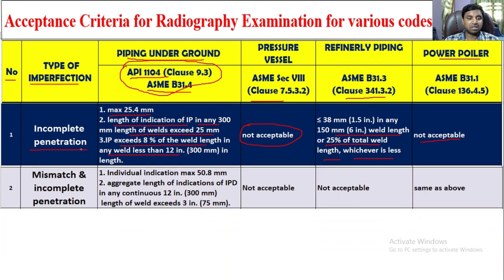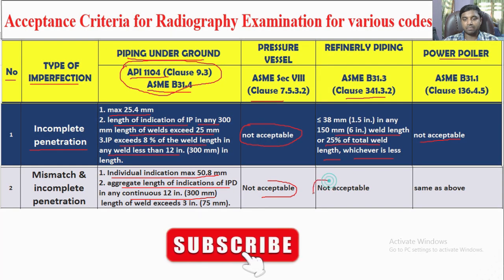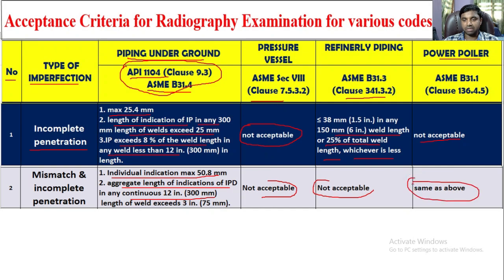Next, mismatch and incomplete penetration combined — specifically for BDOF. In that case, there is incomplete penetration where the individual indication maximum is 50.8 mm acceptable. For aggregate length in any continuous 300 mm, the maximum 75 mm weld length is acceptable. Not acceptable for pressure vessel and refinery piping (ASME B31.3), and ASME B31.1 also not acceptable — same as above.